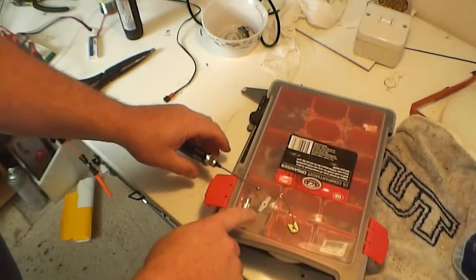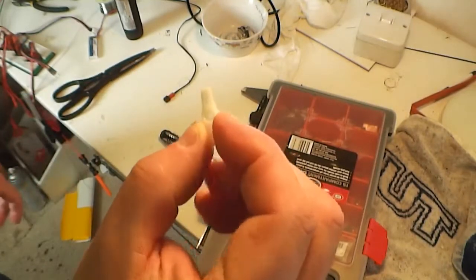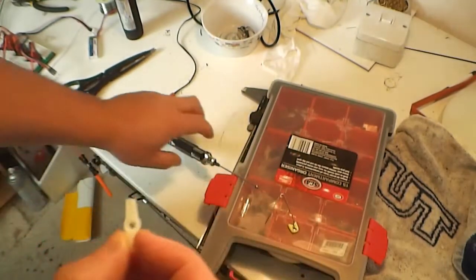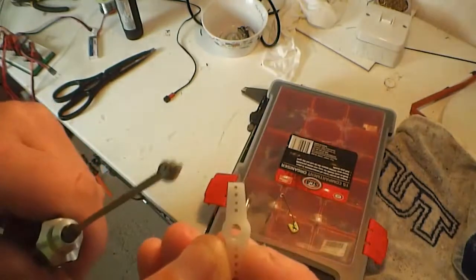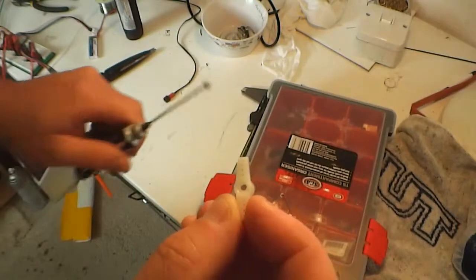The little holes in the servo arms are only about 0.5 or 0.6 of a millimeter in diameter—they're really tiny. And the ball itself is huge, almost 2 millimeters, 1.8 millimeters.